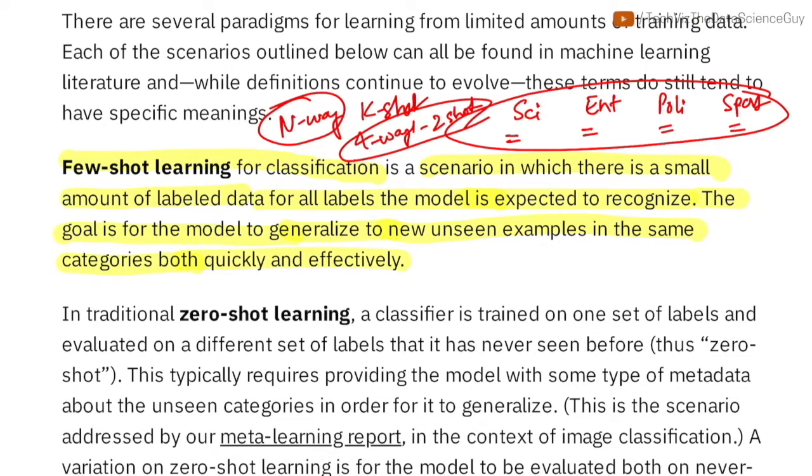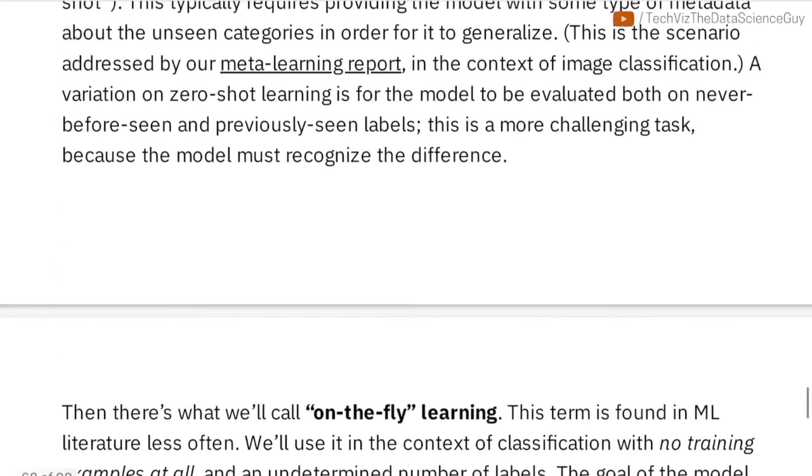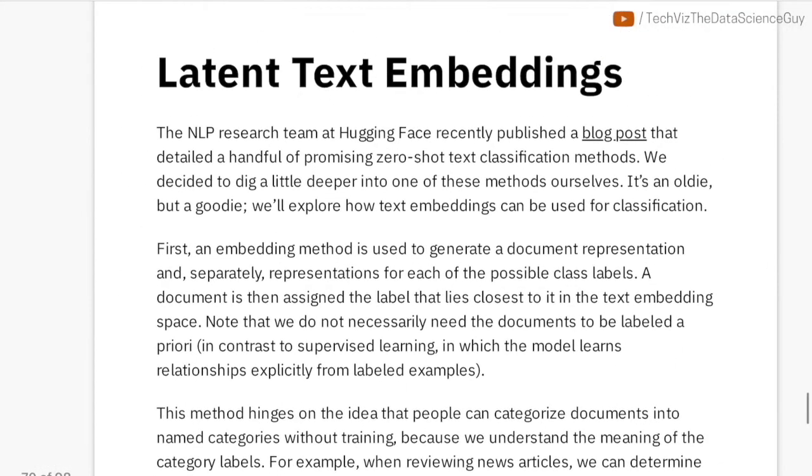Four-way two-shot is the example I'm talking about and that's the usual way how you would find it in literature. So the goal is for the model to generalize to unseen examples in the same categories both quickly and effectively. So if I have a news article, the idea is whether this goes to science, entertainment, politics or sports - either of these four is what I have to assign for this new article.